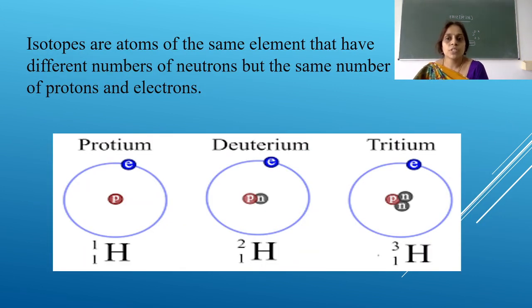The next important concept is isotopes. You can see a slide over there. Isotopes are of atoms of the same element that have different number of neutrons but same number of protons and electrons. So in this, number of neutrons will differ but number of protons and electrons will be same. You can see the picture over there. Yes, there is no neutron at all in the first protium. There is one neutron in the second one, deuterium. In the third one, you can see tritium. There are two neutrons.